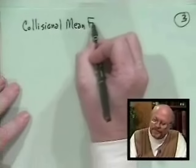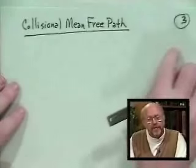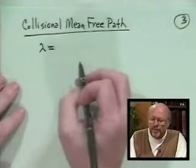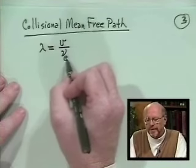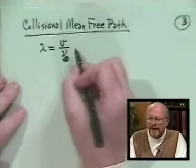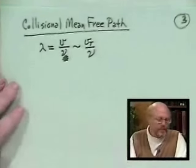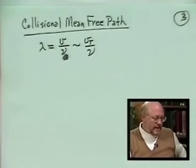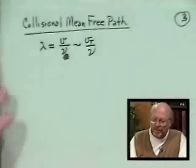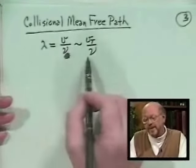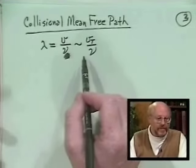Given a collision frequency, we can define the collisional mean free path: the distance traveled before a collision. A particle moves at the thermal velocity for a time 1/ν, so the mean free path is v_thermal / ν. For ions and electrons this gives different values depending on their respective collision rates.